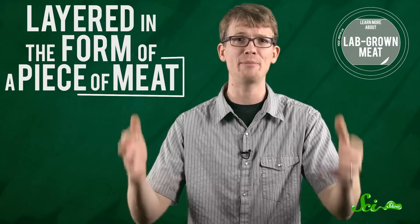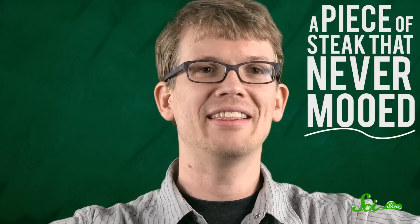So once you've extracted enough of them from a donor animal, they can form bio-ink, they call it ink, that can be put in a 3D printer cartridge and layered in the form of a piece of meat. Those cells then fuse together and form tissue. Yummy! A piece of steak! That never moved.